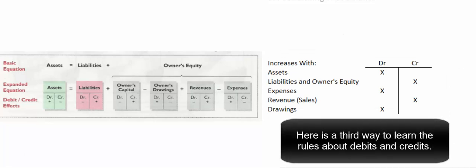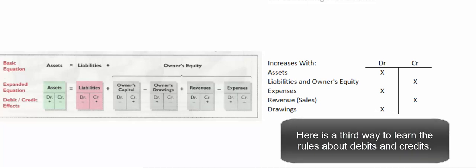A third way to look at it is to make a little chart. Assets — things on the left-hand side of the balance sheet — increase with debits, easy to remember because debit means left. Liabilities and owner's equity increase with credits, easy to remember because they're on the right-hand side and credit means right. Expenses are debits — easy to remember because I say it a bazillion times. The opposite of expenses is revenue, so revenue accounts increase with credits. Drawings starts with a D, so owner's drawings are recorded with debits.